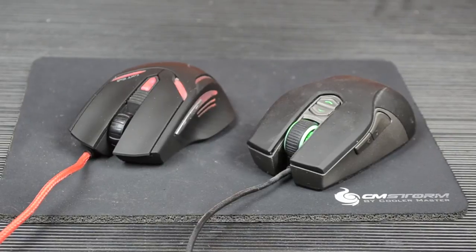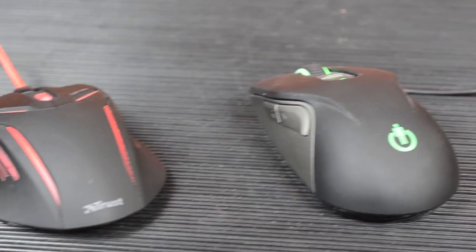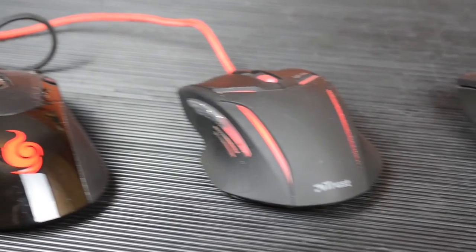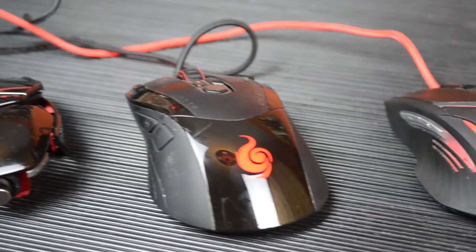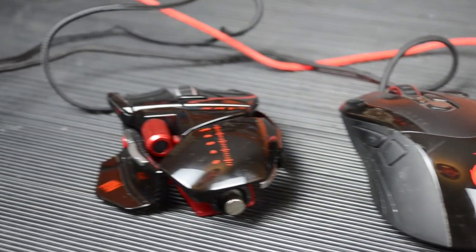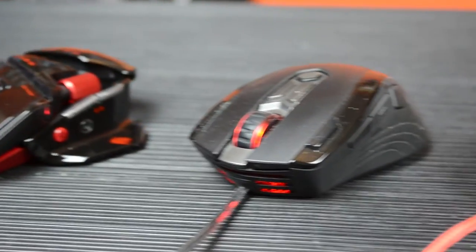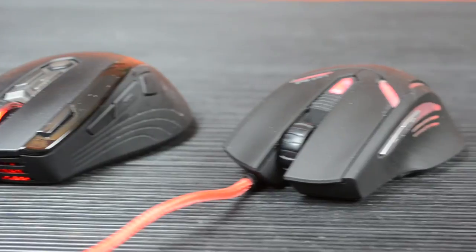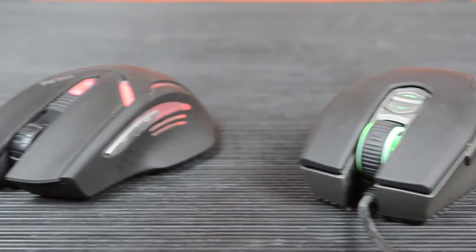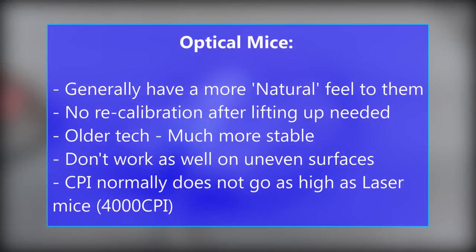This is something people can argue about back and forth and is very subjective, as often a good point of one type is just a dislike of something on the other. For instance, some people say laser is better because it has higher DPI, but this doesn't make an optical mouse bad — just non-preferable for that person. Optical mice have a generally more natural, stable feel to them and no recalibration when the mouse is lifted, keeping a more consistent feel while gaming.